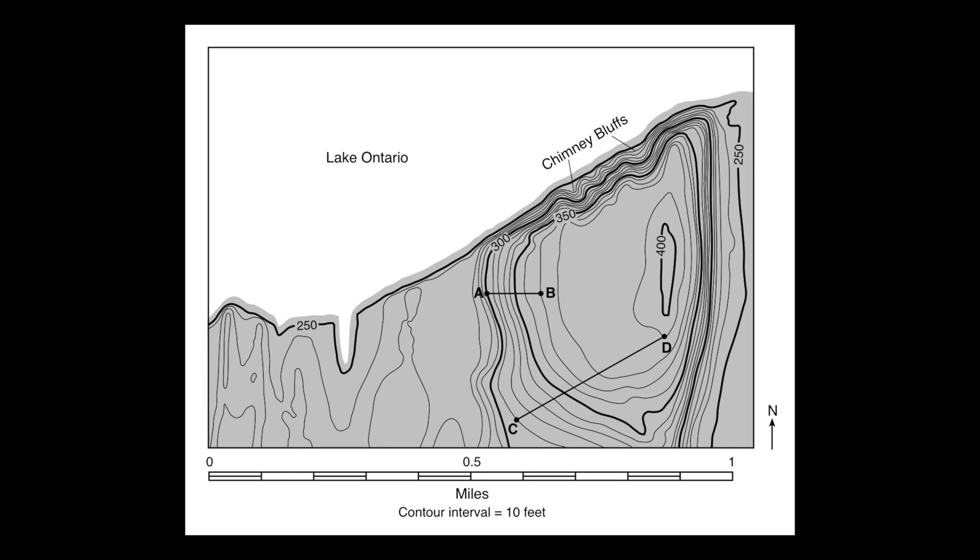Looking at the map itself, I see I have Lake Ontario shown in white. I have these chimney bluffs, which appear to be a very steep-sloped hill on the coastline. I know it's steep just to reiterate, because the contour lines are very tightly packed together.